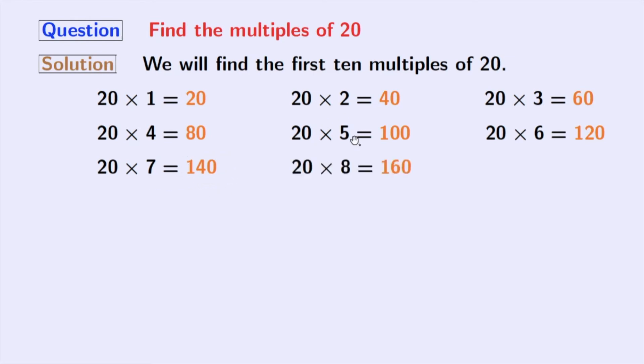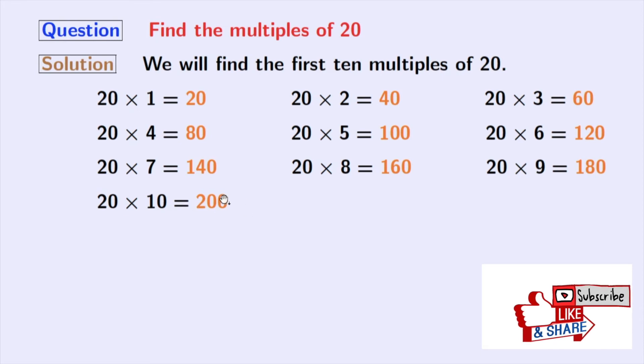Multiplication of 20 and 8 gives us 160. Multiplying 20 with 9, we get 180. And if we multiply 20 with 10, we get 200.